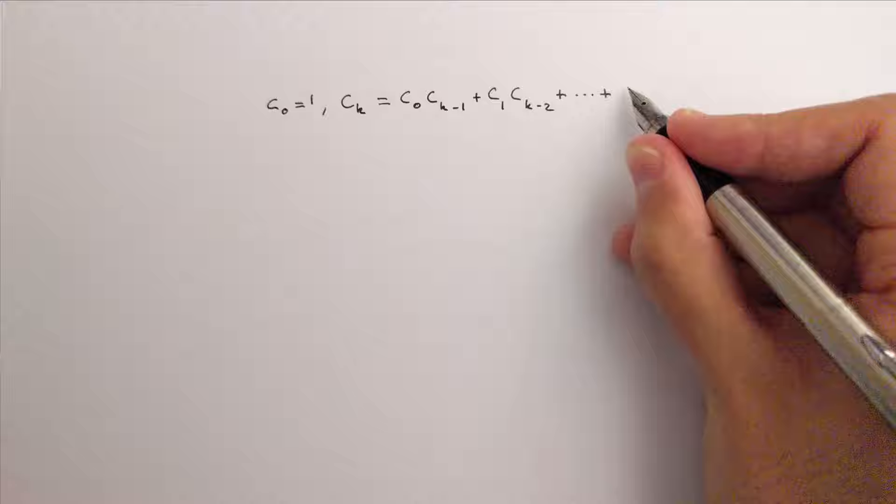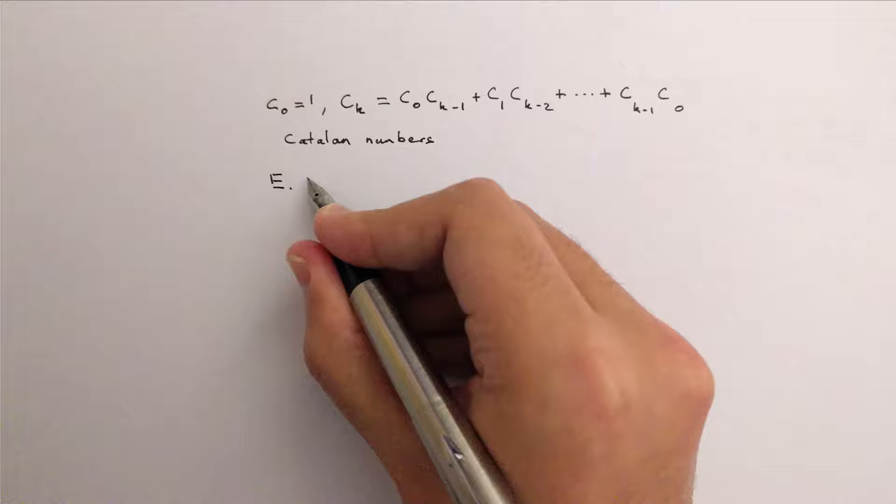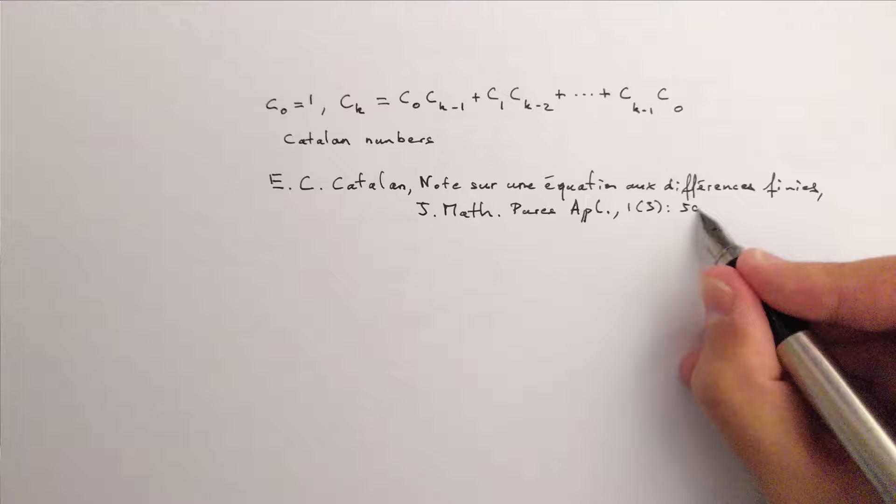These numbers, 1, 1, 2, 5, 14, 42, and so on, which we can define by just the first value and the recurrence, are known as the Catalan numbers, after a guy who in the 19th century wrote a paper about something else which contained a remark about them. It's a bit strange, to be honest.